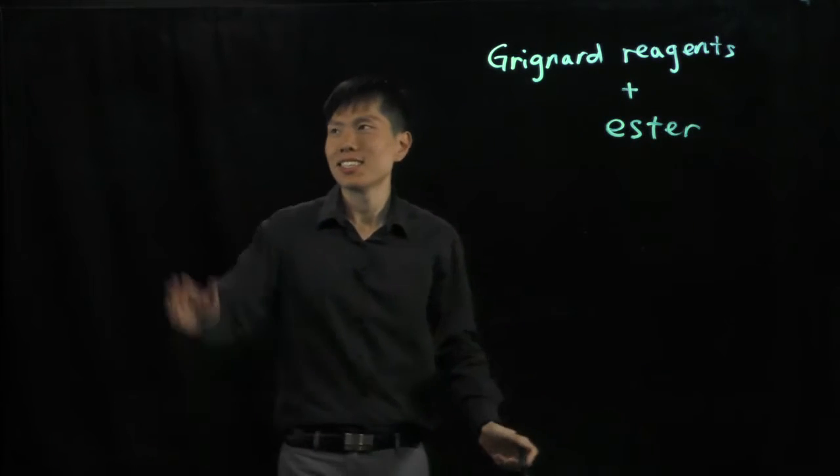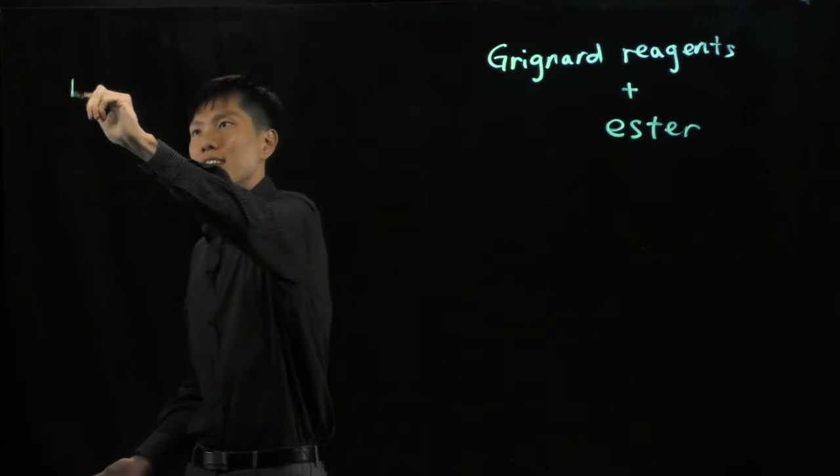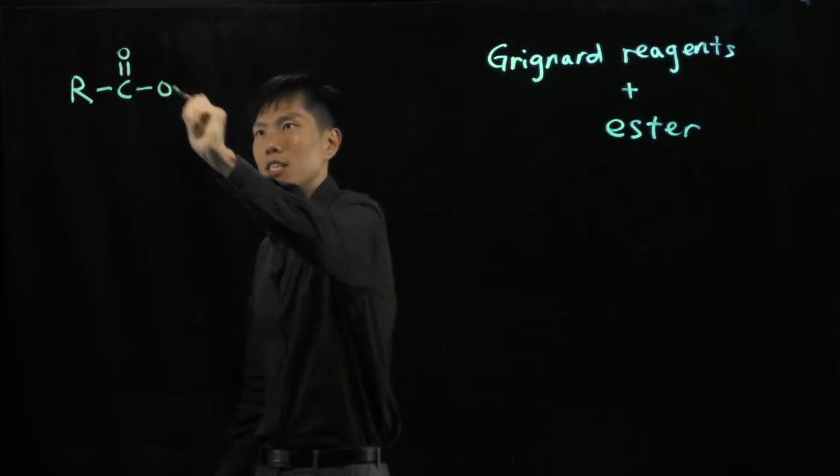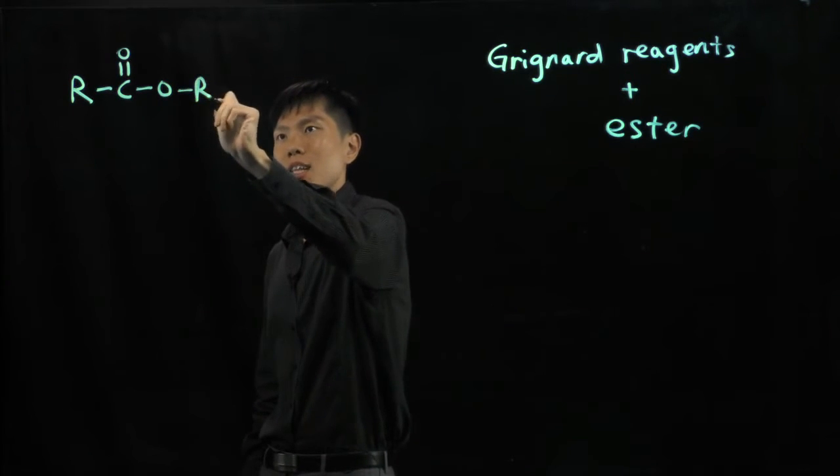Okay? So ester has its functional group R, C double bond O, CO single bond, let me call it R'.